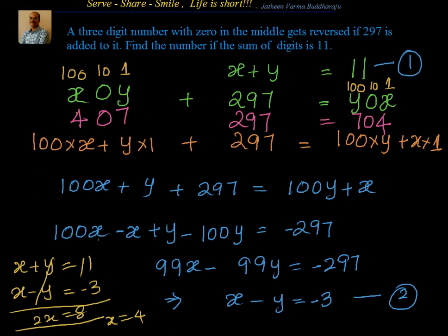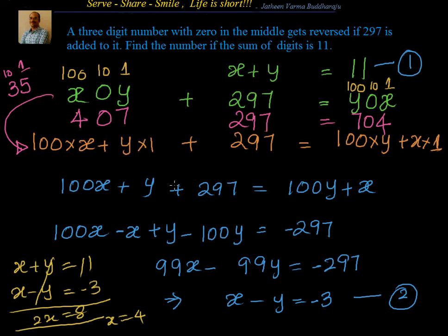Whenever we see problems related to reversing the digits, start with x and y, look for the position in which those variables are, and multiply by the place value. Remember: when we say 3 and 5 next to each other is 35, that's because 3 is in the tens place — 3 times 10 plus 5. Apply the same logic here. That's an interesting example of linear equations in two variables — how to find a three-digit number with zero in the middle that gets reversed when a value is added. Thanks for your time and support. Bye for now.